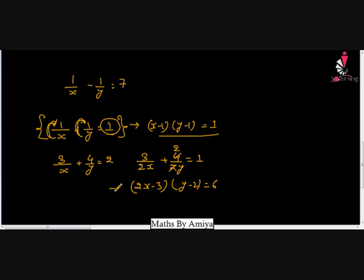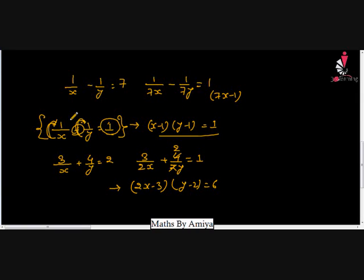So here we have 1/(7x) minus 1/(7y), which we convert to get RHS equal to 1. This gives us (7x minus 1)(7y plus 1) equal to minus 1 as the constant — and the factors of minus 1 are what we need to work with.